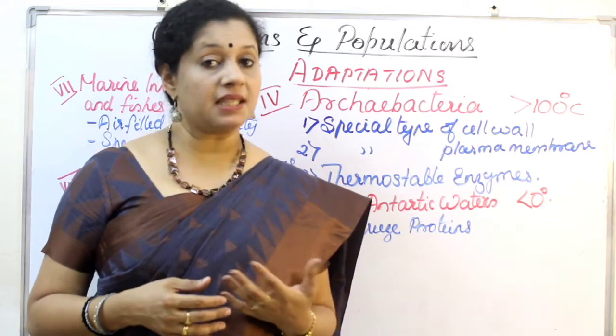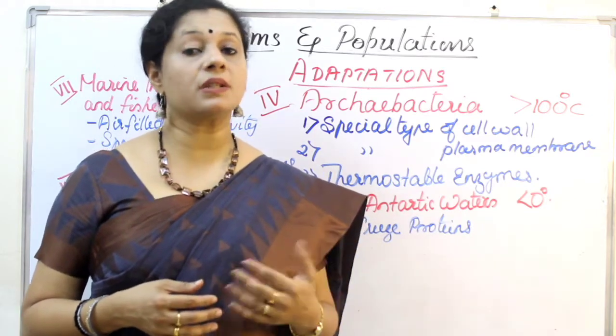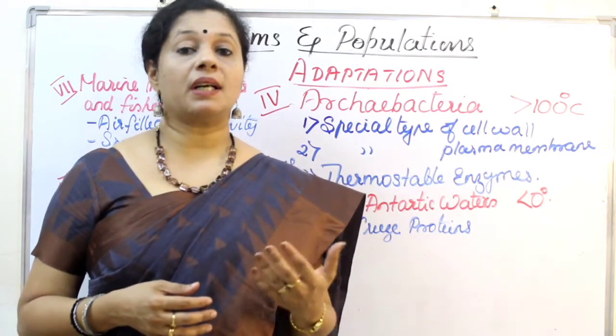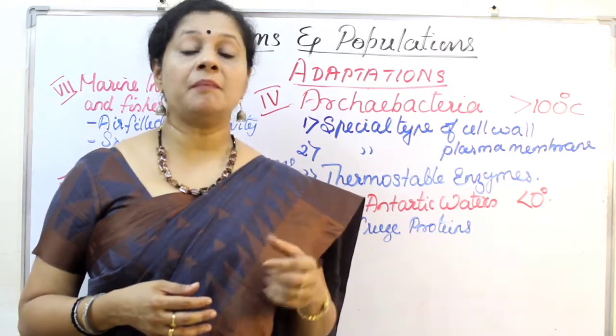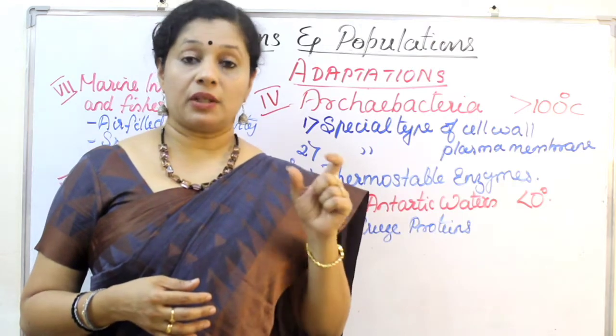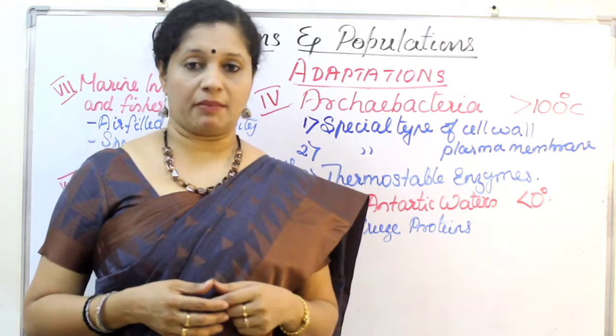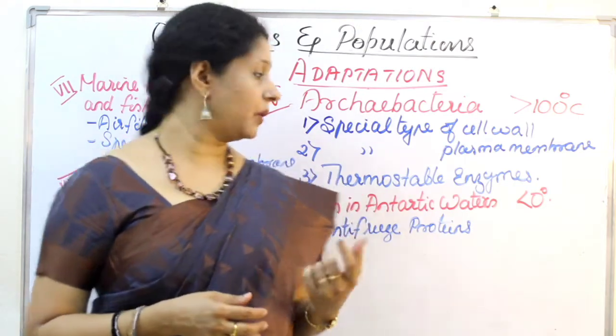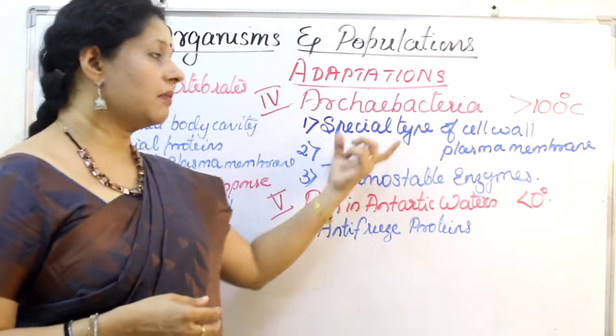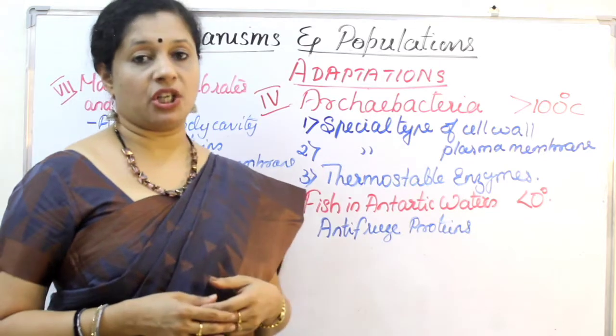One example we learned is in PCR, where we use the DNA polymerase enzyme from Thermus aquaticus — called Taq polymerase. That is a commercial exploitation of these thermostable enzymes.